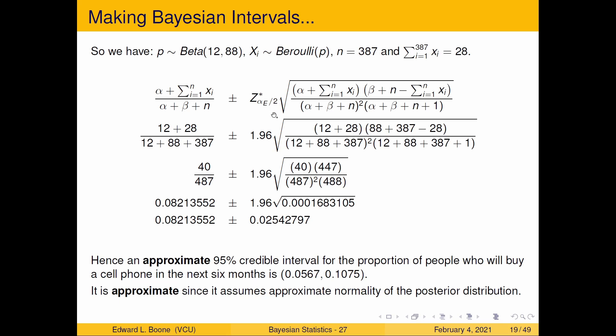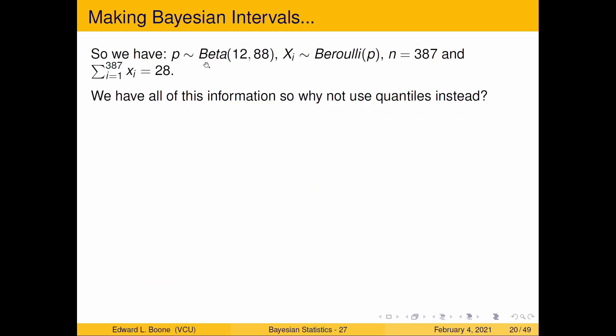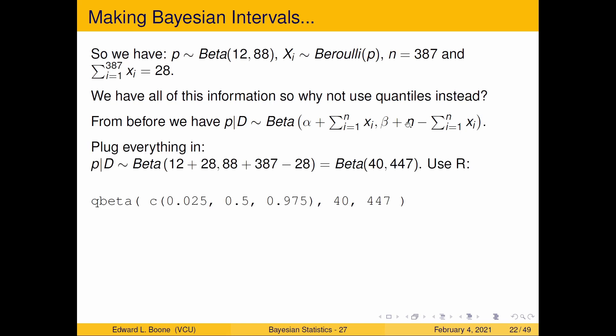So we also have this information, well we could use quantiles instead so why not let's give it a go. It's pretty easy, remember from our first slide we have this, we know this formula, we know all the numbers there. Plug everything in and we end up with a Beta(40, 447). Use R, here's the code for R right here. Notice that I'm going to get the lower 0.025, I'm actually going to grab the median in case I need a point estimate, and I'm going to grab the upper 0.975, all of these quantiles from a Beta(40, 447).